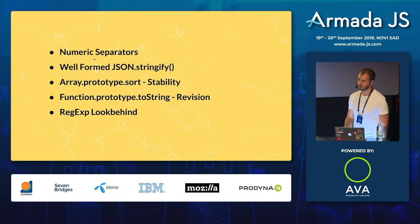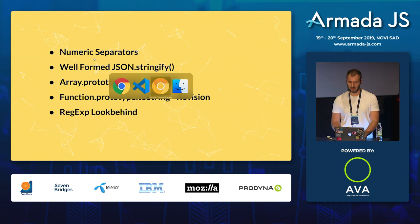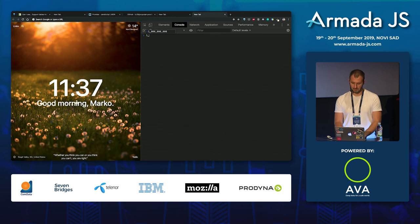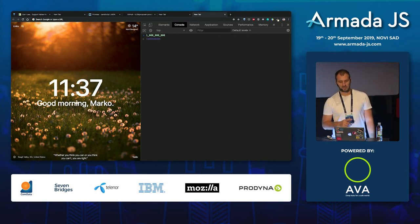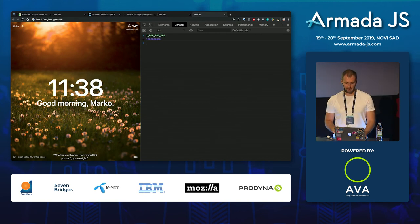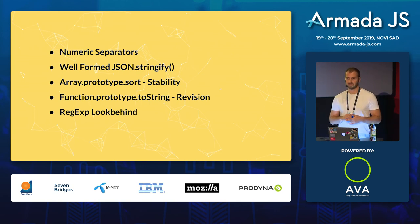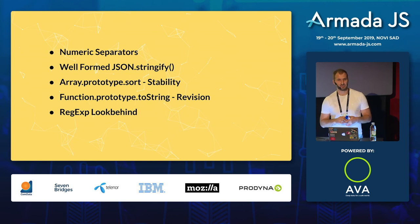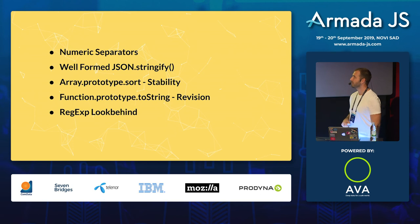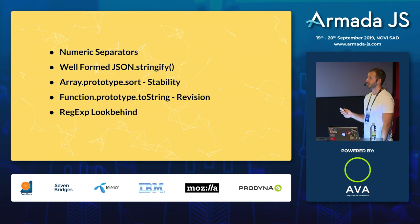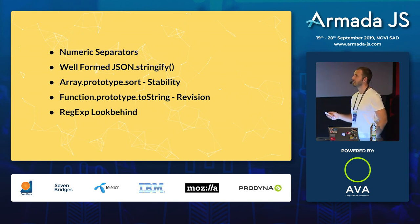Some of the other, smaller additions: there are numeric separators - if you need to write really big numbers like a million or billion, you can now use underscores to separate the digits. It's just for reading convenience and will be transformed to a regular number. There's also a well-formatted JSON.stringify fix: JSON.stringify had problems when you wanted to stringify and then parse Unicode strings - it wasn't working properly and now that's fixed. It also preserves whitespace better.